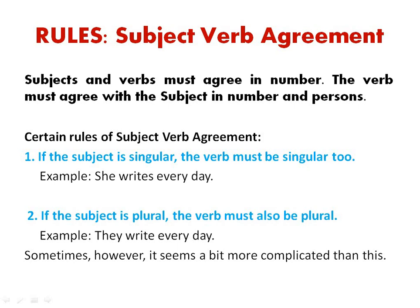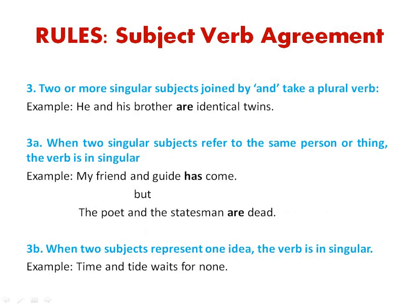So, rule 1 and rule 2 establish that if the subject is singular, the verb is singular too; if the subject is plural, the verb must be plural too. Rule number 3: when two or more singular subjects are joined by 'and,' they take the plural verb. For example, 'he and his brother are identical twins.' We do not say 'he and his brother is identical twins'; we say 'he and his brother are identical twins.'